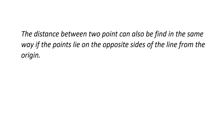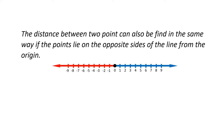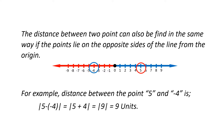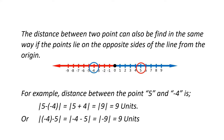The distance between two points can also be found in the same way if the points lie on opposite sides of the origin. For example, the distance between point five and negative four is the absolute value of five minus negative four, which equals nine units, or the absolute value of negative four minus five, which is also equal to nine units.